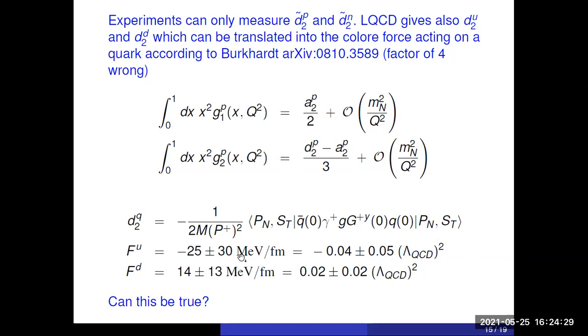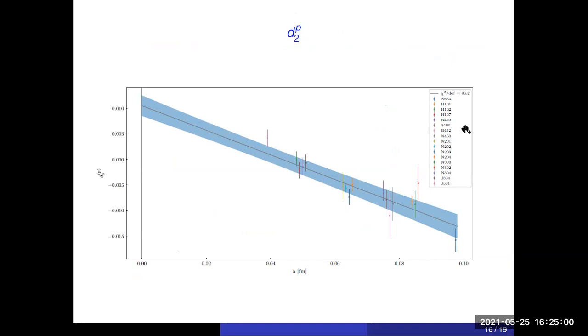However, you have it on the quark level, and that allows to extract the color Lorentz force acting on, for example, the up quark and the down quark. And these come out to be compatible with zero, which is surprising because you might have expected something of the order of the energy scale of QCD squared. However, this is only like two or 4% of that. And the question is why it is so small.